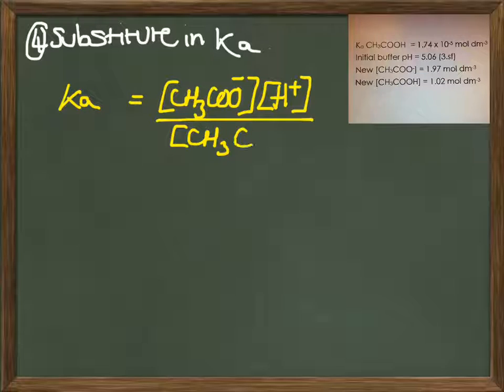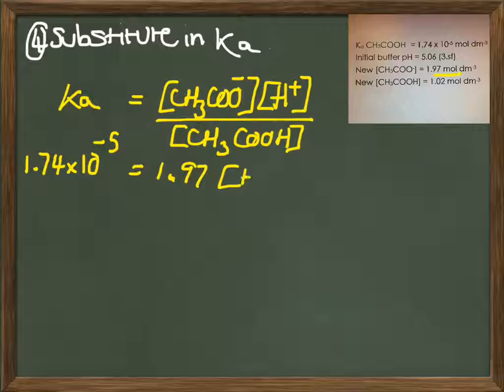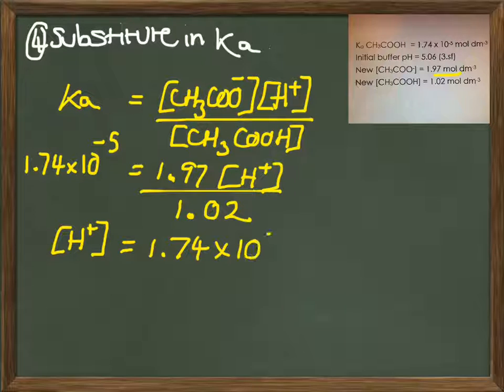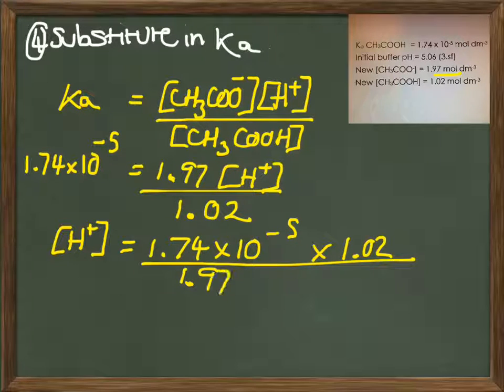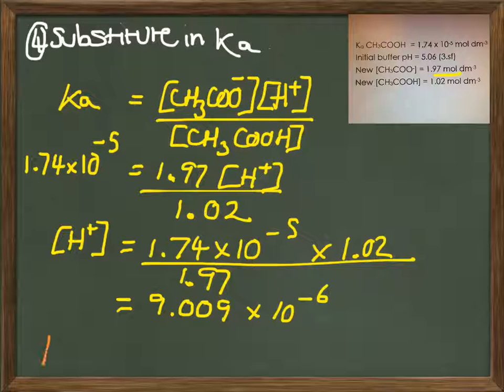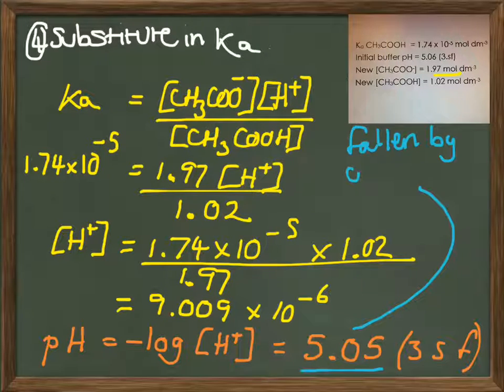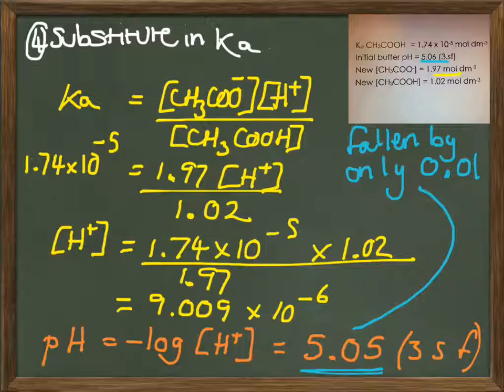Substitute in your new concentrations into your Ka expression. We've got our Ka value from the previous question. Then rearrange once you've substituted in all your concentrations to make the proton's concentration your subject. Plug it into your calculator. You'll get 9.009 times 10 to the minus 6 moles per decimetre cubed. Then convert that to pH by taking the minus log of your answer. That should give you a pH of 5.05 to 3 sig figs. You can see that the pH has only fallen by 0.01 compared to your initial buffer's pH.